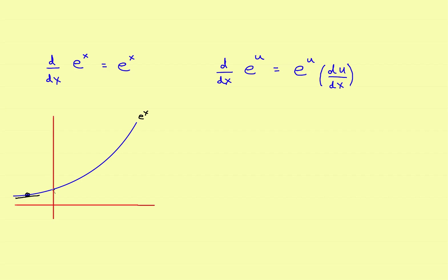If I were to come over here and pick this point, draw the tangent line, find the slope of the tangent line, the slope will lie right on the e to the x graph there. If I pick another point and draw the tangent line, the value of the slope of that tangent line is exactly the same thing as the value of the point on e to the x. Going up and repeating the process — drawing tangent lines — the slope of each tangent line is exactly the value of e to the x at that point. So when you're finished, if you were to draw the graph of the derivative, it will lie right exactly on top of the graph of e to the x.